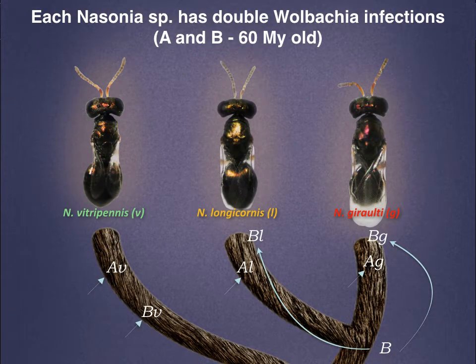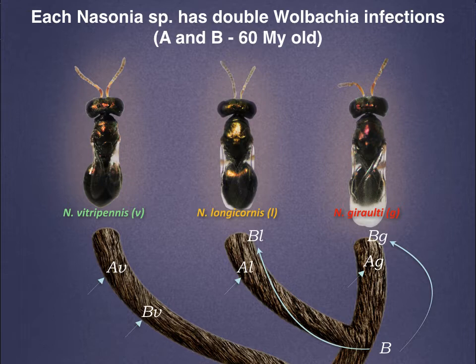We traditionally study three species regarding reproductive isolation and the role of microbes. Each species has two different Wolbachia types, called A and B, which diverged about 60 million years ago — very ancient strains. There have been multiple acquisitions into each species. There's one example where an ancestral B Wolbachia infection appears to have co-diverged with the speciation event of Longicornis and Geralti, producing two fairly closely related B Wolbachia strains between these two species.